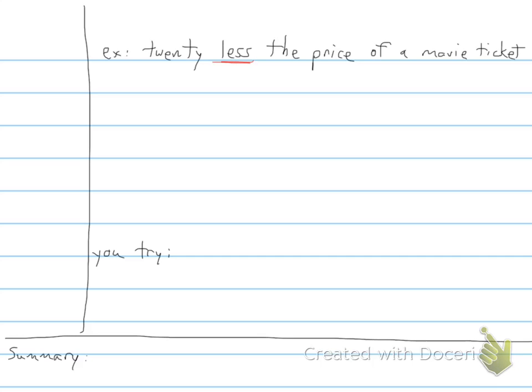and so we know that we're going to be subtracting. But what we don't know is the price of the movie ticket. So that is going to be our variable.